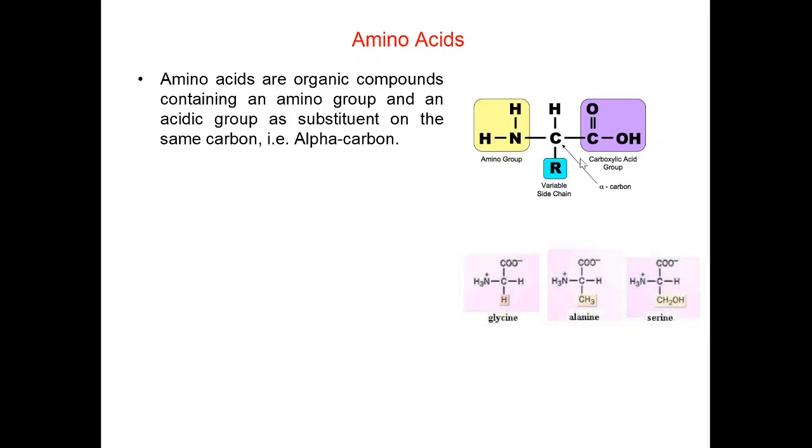There are four groups present on alpha carbon in this case: hydrogen, carboxyl, amino and variable R group. This is the hydrogen, then carboxylic acid group, then amino group and variable R group. As R group varies, the name of amino acid also varies.